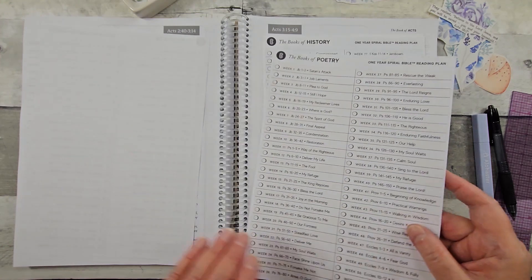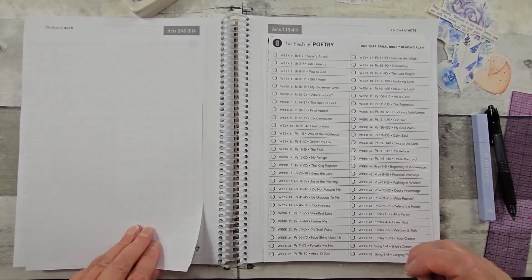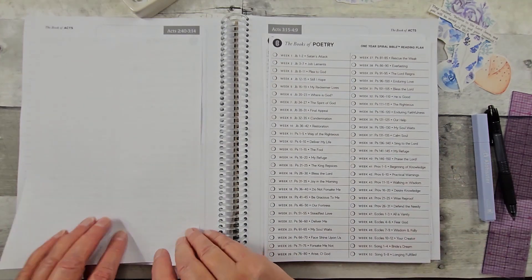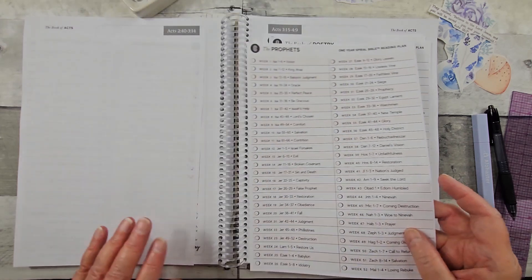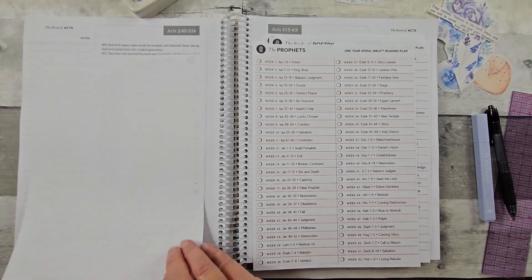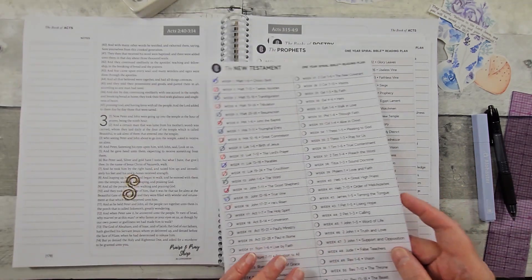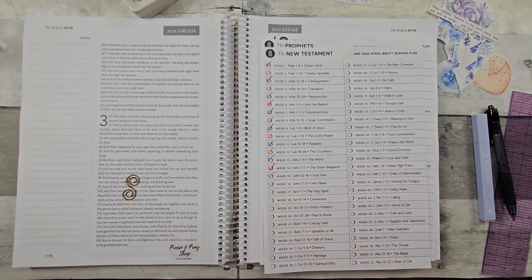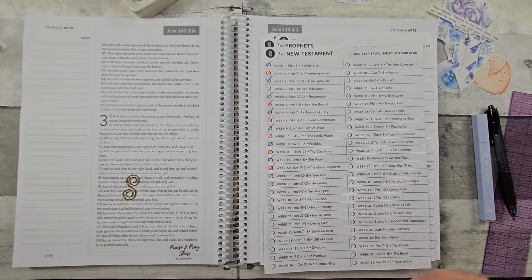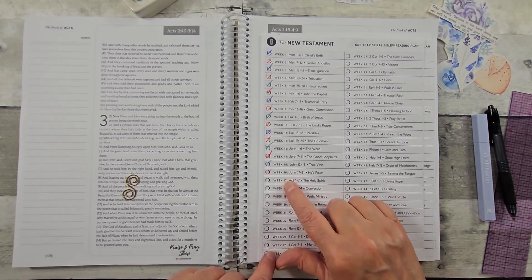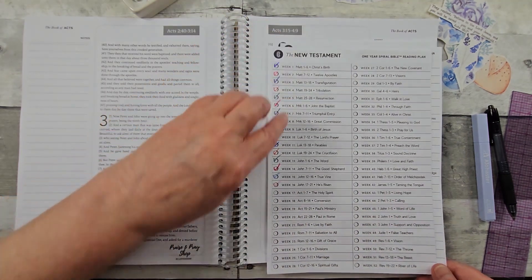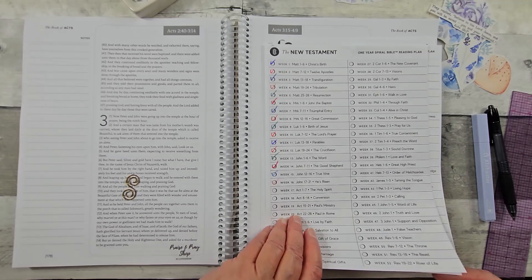Sometimes you're going to read the Bible through, that's your goal for the year, and then there's days that you can't do it and you get behind. This, to me, is more workable for me. As you can see, I am up to Acts 1 through 7.